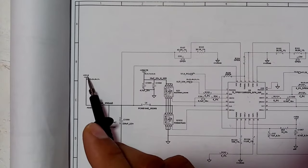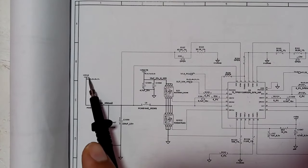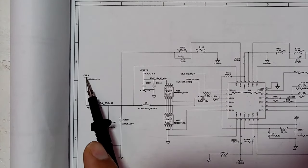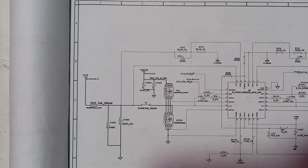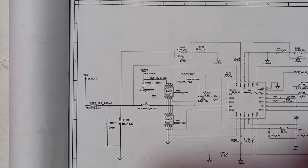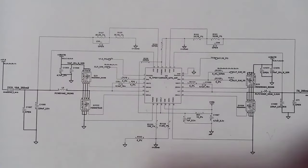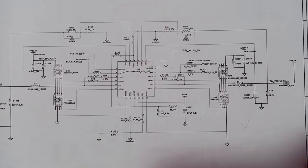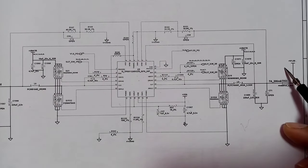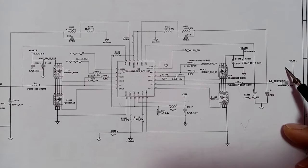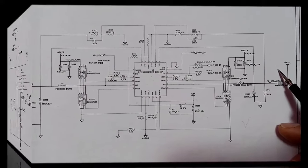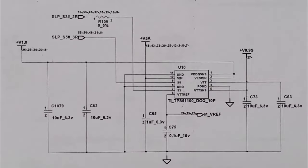So 1.8V is basically for the RAM — this is the working power for DDR2 RAM. The working power for DDR2 RAM is 1.8V, and 0.9V for VTT or terminals. The 1.5V is basically for chipsets, especially the North bridge. The second circuit covers the RAM — random access memory.